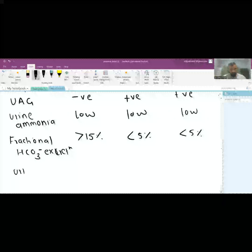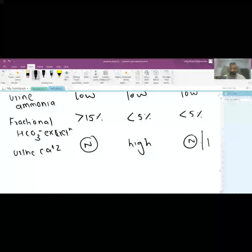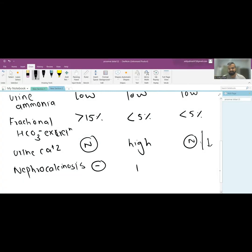Urine calcium is normal in type 2, while in type 1 it is increased, and in type 4 it is normal to decreased. Urine calcium is associated with nephrocalcinosis. Nephrocalcinosis is absent in type 2, present in type 1, and absent in type 4.